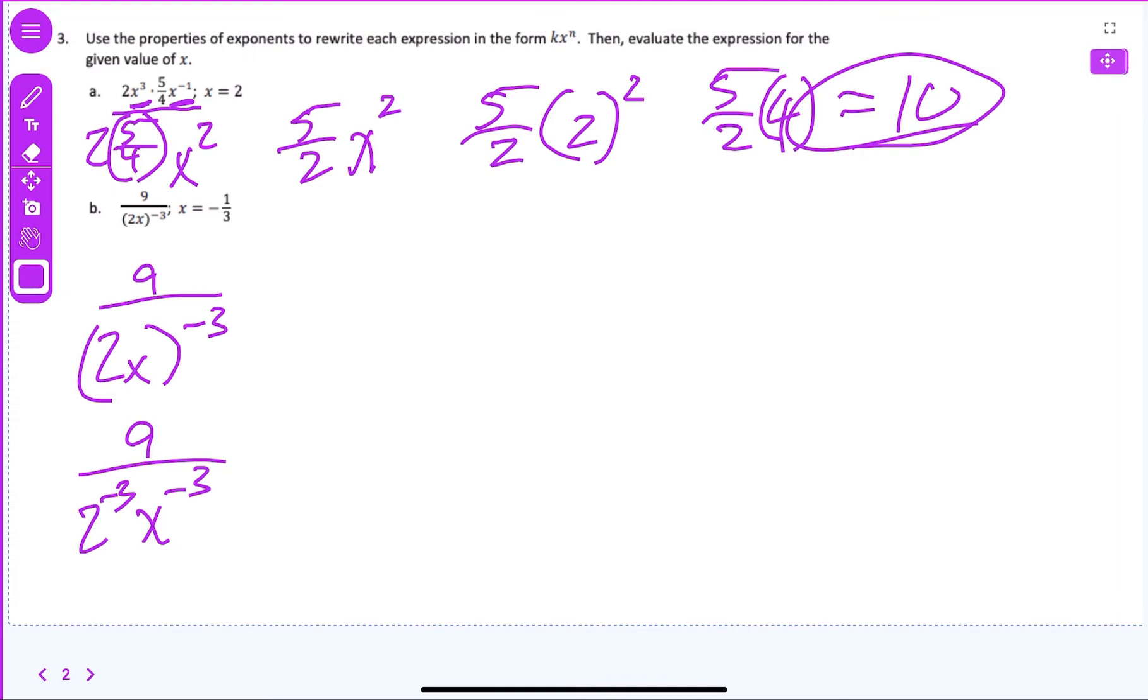What we want to do, since that exponent is outside of the parentheses, you have to take that and move it to each term inside the parentheses. So now you're going to have 9 over 2 to the negative 3 times x to the negative 3. Everybody good with that? Now we just distribute this to both terms inside the parentheses.